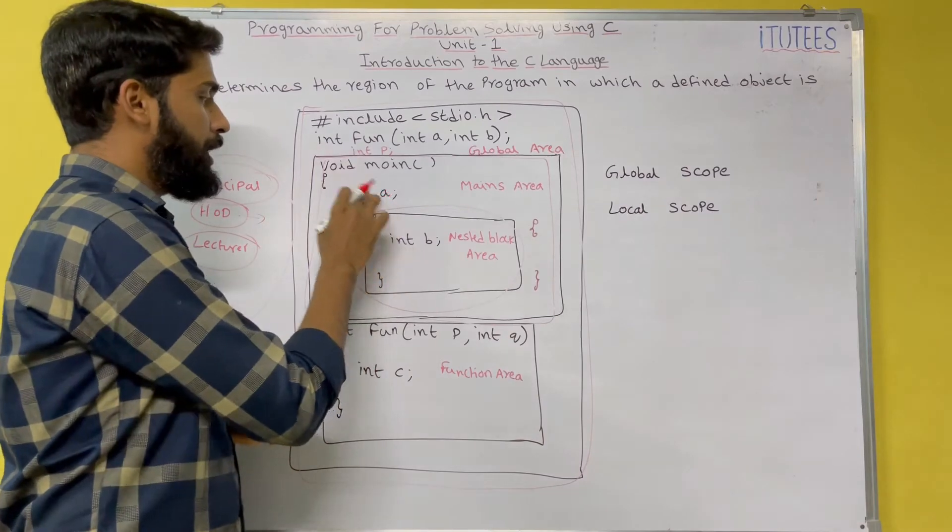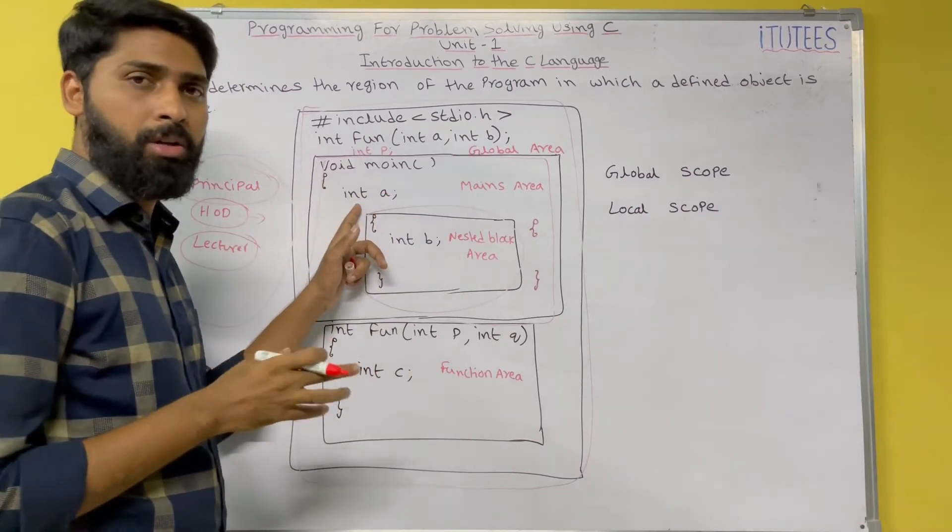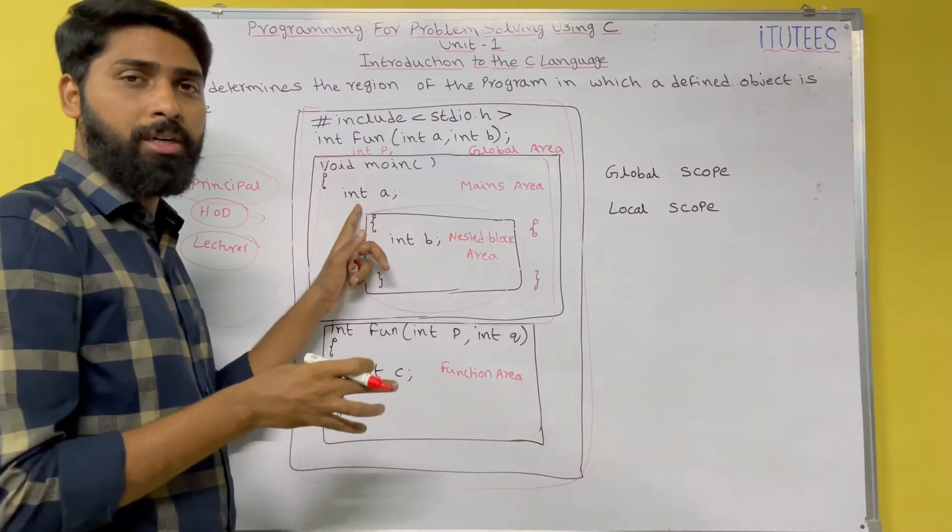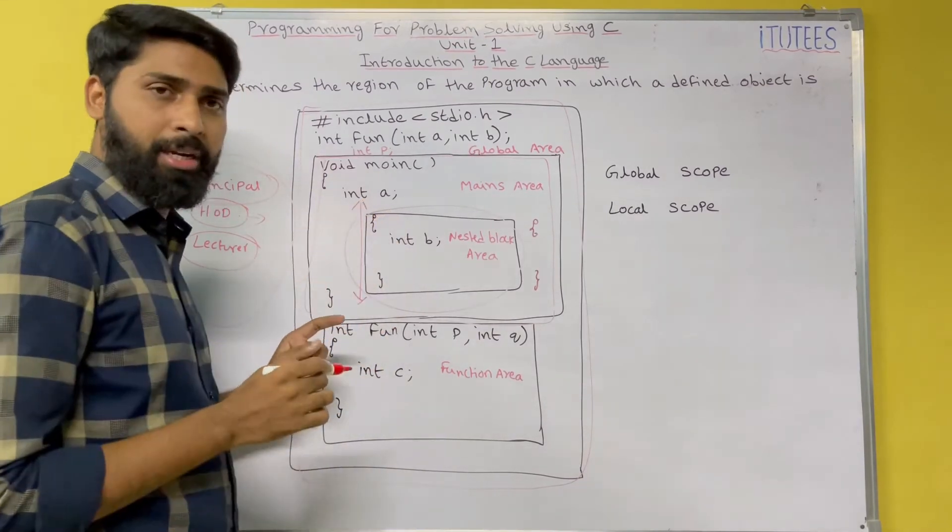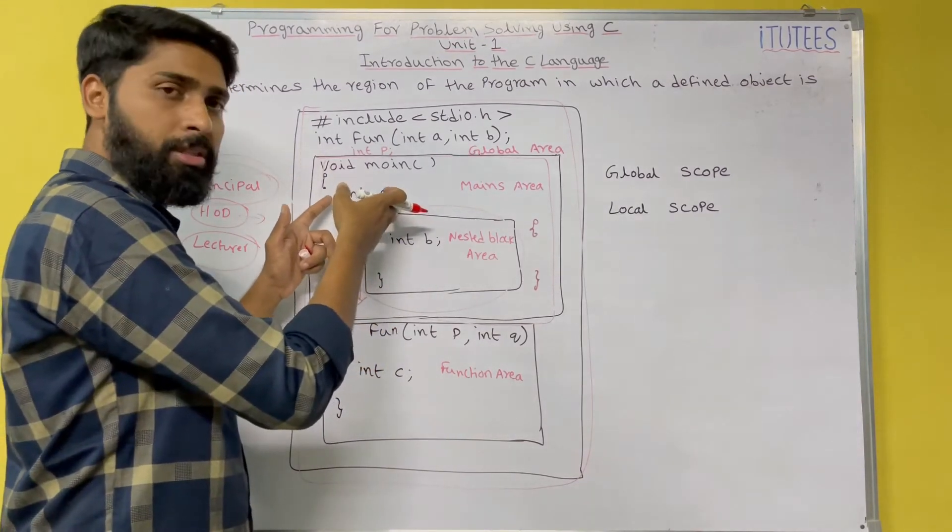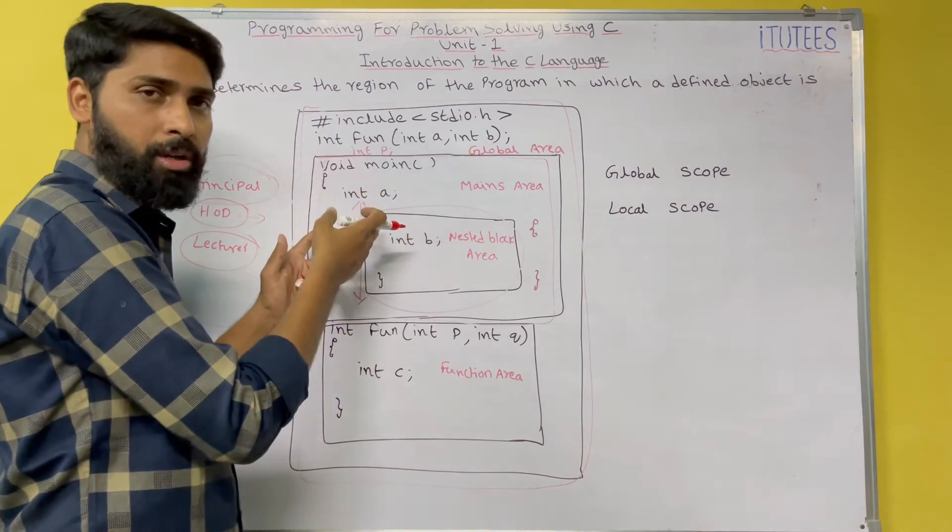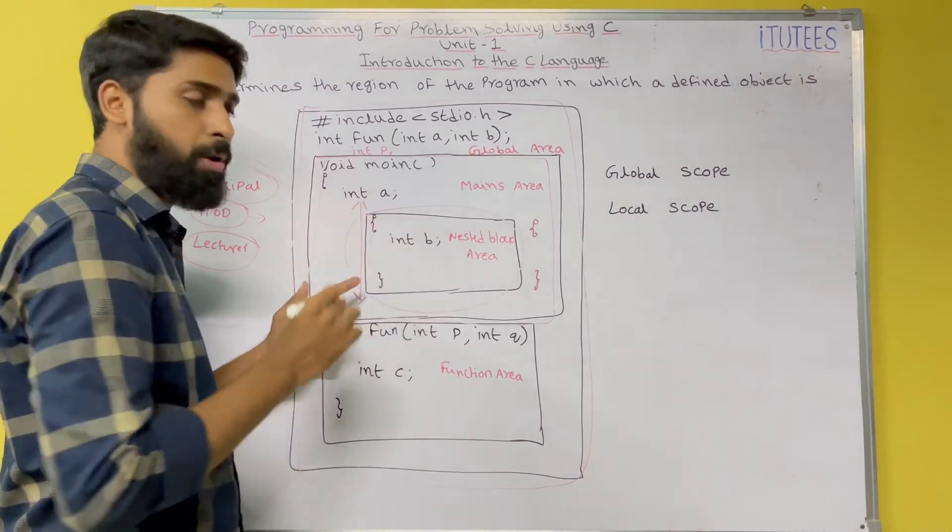So next, here I declare int a. Now, the scope of the a is within this block only. I declared here. And I can use this a within this block only. I can use this a in this block also.